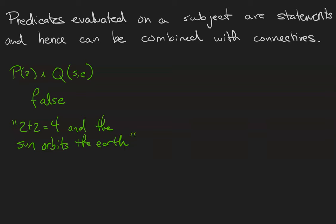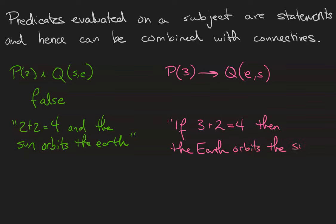I could also do something like if P of 3 is true, then Q of e s is true. If 3 plus 2 equals 4, then the Earth orbits the Sun. That is true because a conditional statement with a false antecedent is always true.